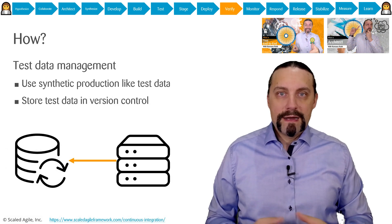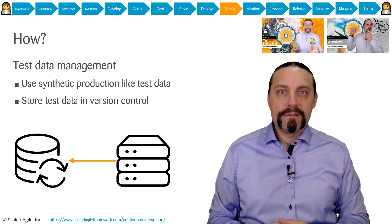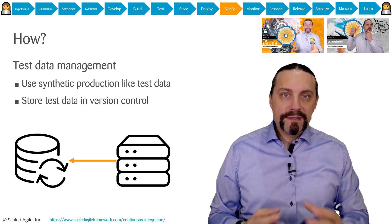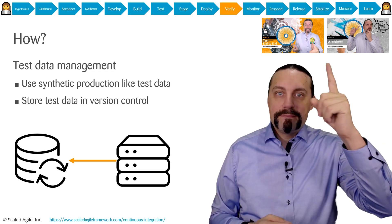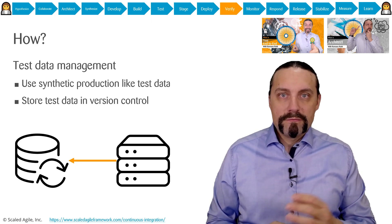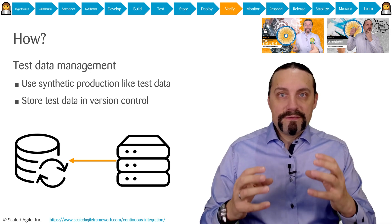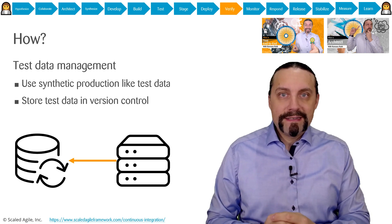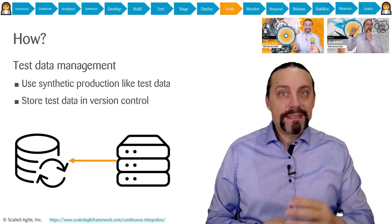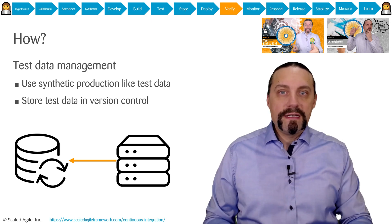To verify our package in production, we of course need to have test data and a test data management. We already talked about test data management in the architect step and in the test end-to-end step. Test data management is crucial when it comes to test execution and to tests. We need to have a very good set of synthetic test data so that we are able to execute our tests against this test data. This test data of course needs to be stored in version control.